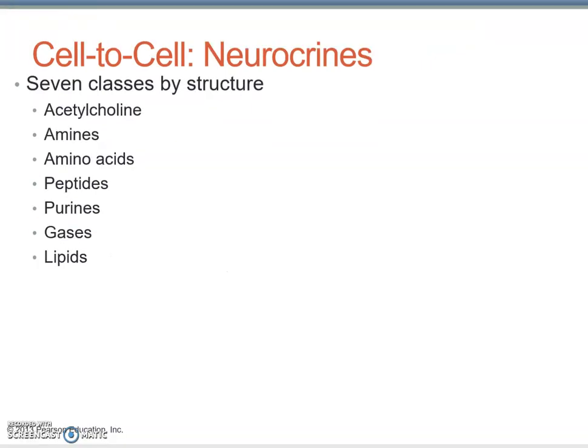Here are the most important classes of neurotransmitters. For this course, there are really only two classes that matter. Number one is acetylcholine, which is in a class by itself. Then there are the amino-derived neurotransmitters — in this case, norepinephrine is the most important. While there are other classes of neurocrines, acetylcholine and norepinephrine in the catecholamine category are by far the most important neurotransmitters you need to know.